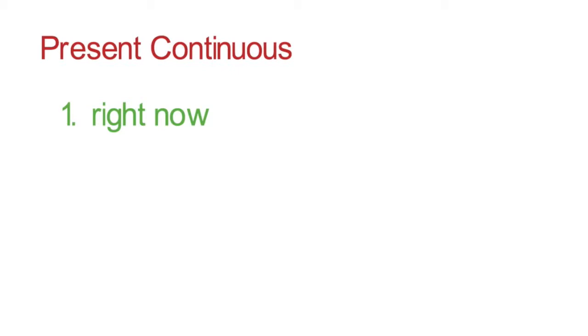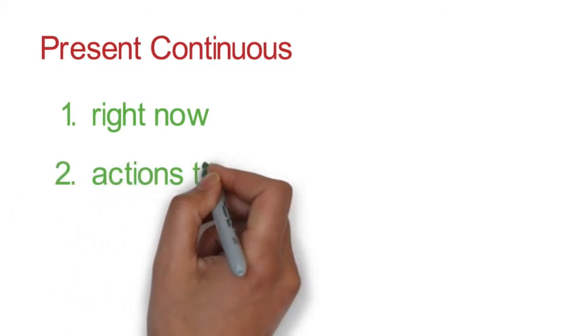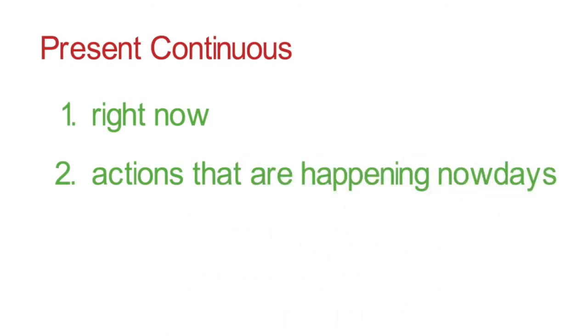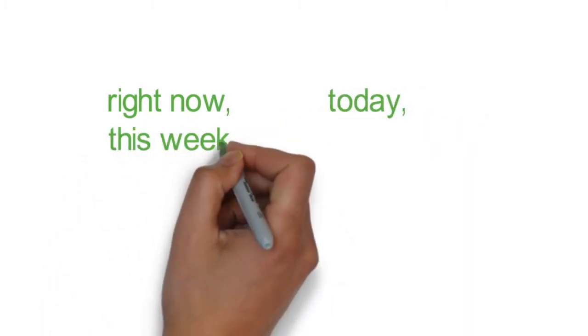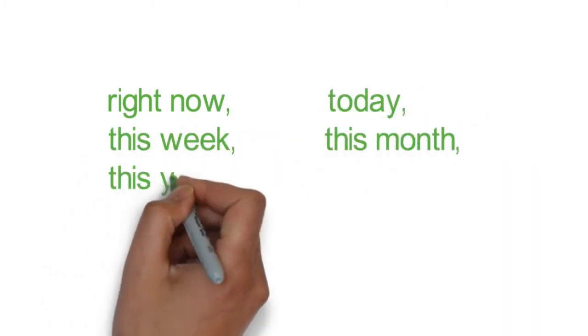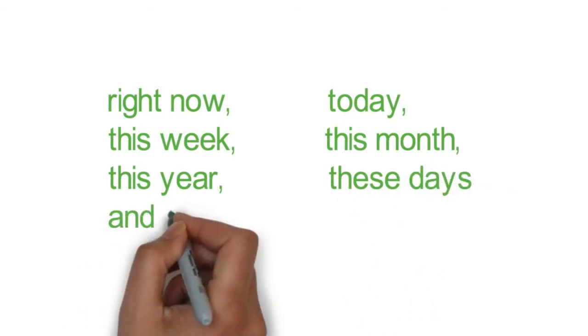We can also use the present continuous tense to talk about longer actions that are happening nowadays. This means they are happening right now, or today, this week, this month, this year, these days, and so on.